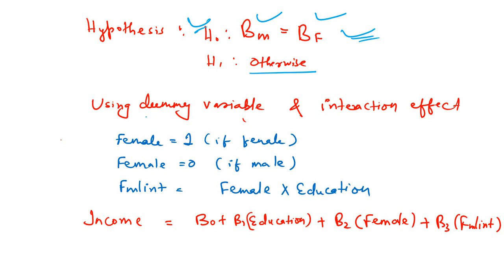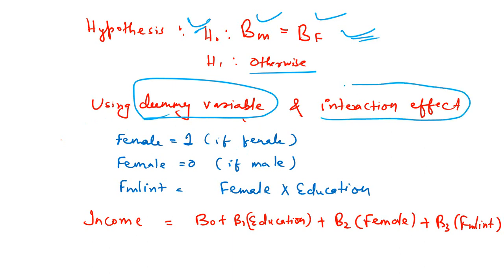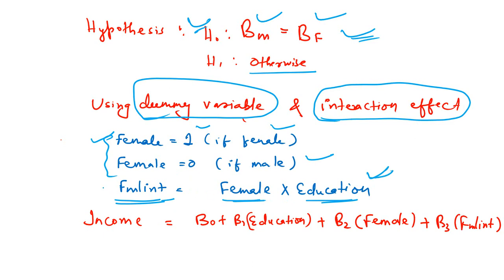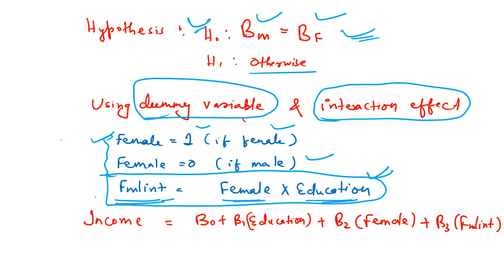To test this, we use a dummy variable and an interaction term. We define the dummy variable as 'female,' which takes 1 if the observation is from the female category and 0 if it is from the male category. We then define an interaction term by multiplying the dummy variable with the independent variable education. So the interaction term is: female × education. We will include the dummy variable and the interaction term in the regression equation and re-estimate it.